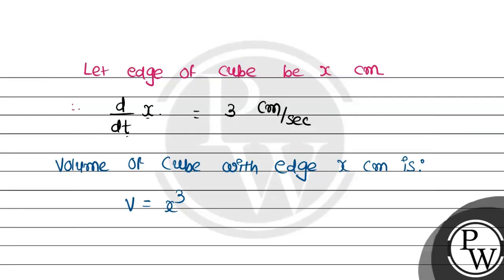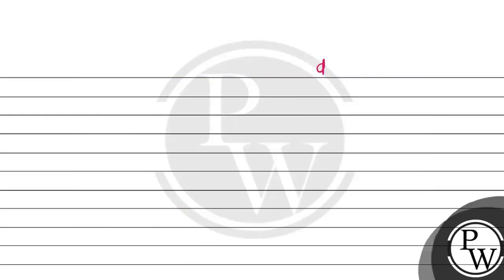We take the derivative with respect to time. That will be dV/dt = d/dt(x³). We know the general rule for derivatives. The same rule applies here. That will be dV/dt = 3x² × dx/dt.